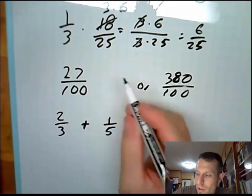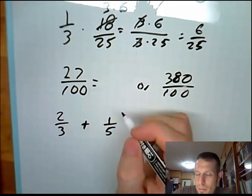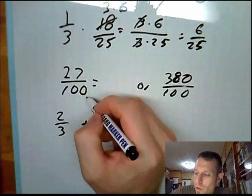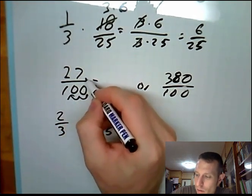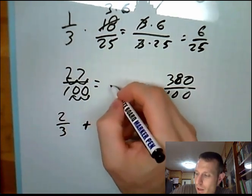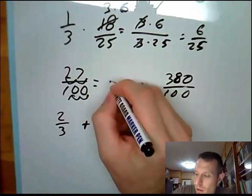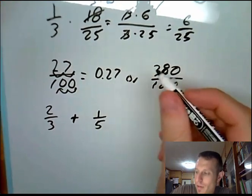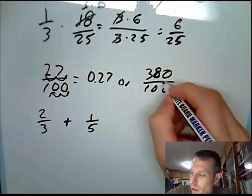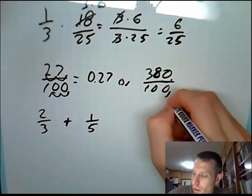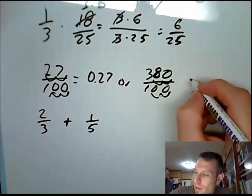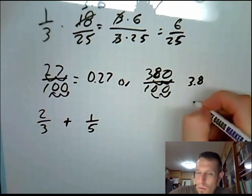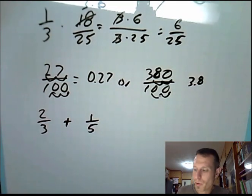27 over 100, if we want to make that, to divide that, we know all you need to do is move this decimal place over to the left twice. 27 divided by 100 is 0.27. It's the same thing with 380 divided by 100. Pretend there's a decimal there, which there kind of is. Move that to the left twice and you have 3.8 over 1, which is just simply 3.8.